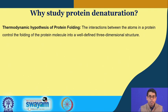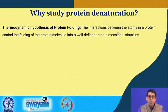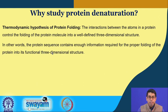Before we go into the study of protein denaturation seen in the lab component of this week, let me reintroduce the thermodynamic hypothesis of protein folding. It is important to understand why we study protein denaturation — we know the native or folded protein is the functionally important one, so why should we care about unfolding it? The thermodynamic hypothesis states that the interactions between atoms in a protein control the folding of the protein molecule into a well-defined three-dimensional structure. It means the protein's primary amino acid sequence contains enough information required to fold the protein into a three-dimensional shape.